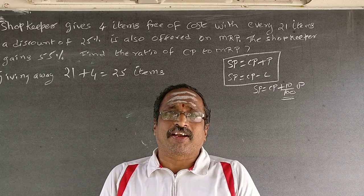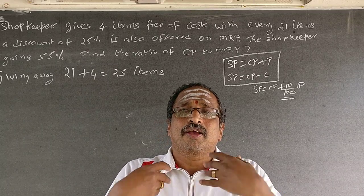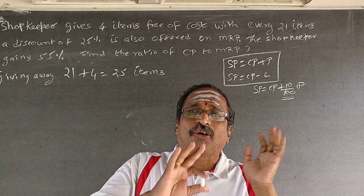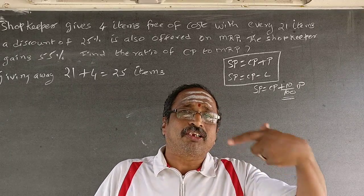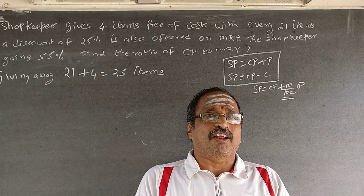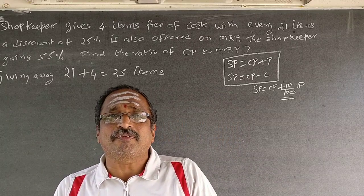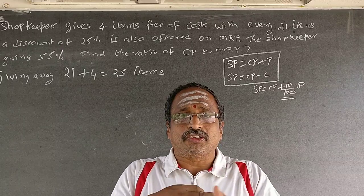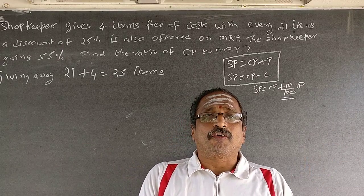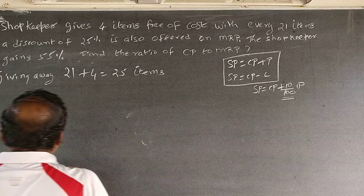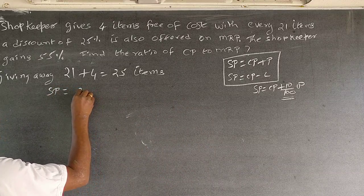As far as the shopkeeper is concerned, he is giving away 25 articles, so the cost on 25 articles is gone. He is making a profit on these 25 articles — a profit of 55 percent. Because 25 articles are gone, you have to be concerned about the cost price of 25 articles. So the selling price equals 25 CP plus 55 percent of 25 CP.